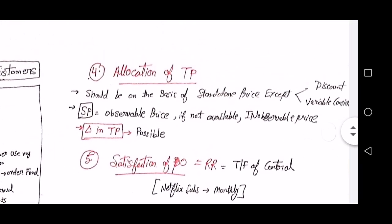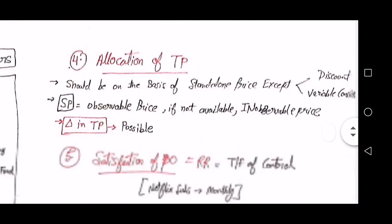Step four is allocation of transaction price, which should be based on standalone price only — except in the case of discount, where discount is reduced upfront and variable consideration is treated accordingly. The standalone price should be an observable price that is easily identifiable. If not easily identifiable, you can use an unobservable price such as an identical value comparison. The transaction price can be changed if there are modifications.